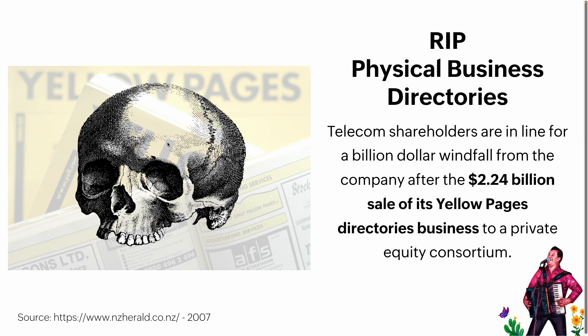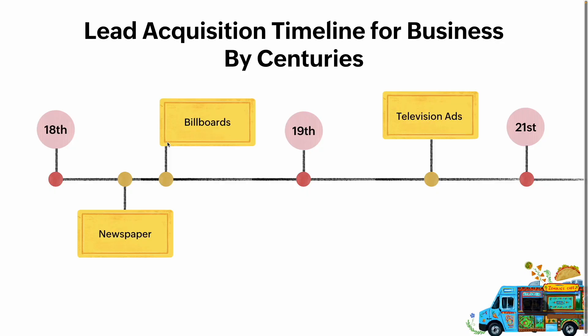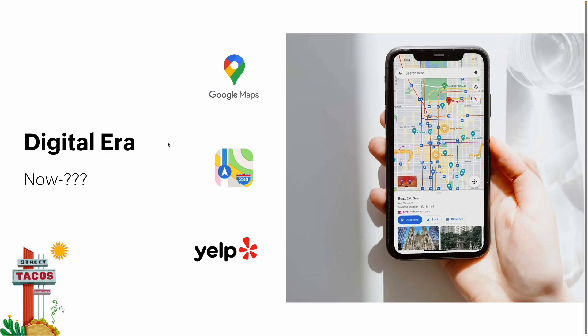Truly you can make money doing anything — if in 2007 you can make billions on Yellow Pages. 'Private equity consortium' — I just like that phrase. But maybe they're not gone — we'll talk more about this later. So that's kind of how things went. People would use these for lead acquisition — you'd get them through newspapers, billboards, TV ads — but now we're in the digital era.